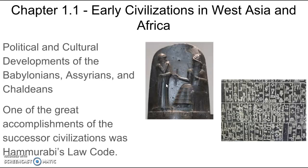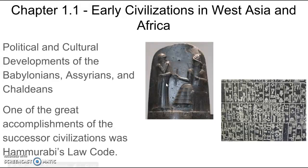One of the greatest achievements of these so-called successor civilizations was Hammurabi's Law Code. Hammurabi's Law Code is one of the earliest known legal systems in the world, well known for the concept of an eye for an eye and revenge. Also, different groups in society were treated differently under Hammurabi's Law Code.